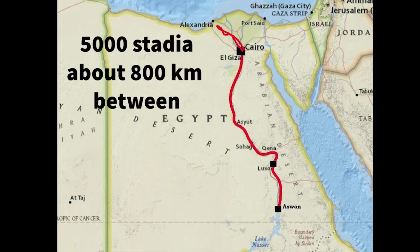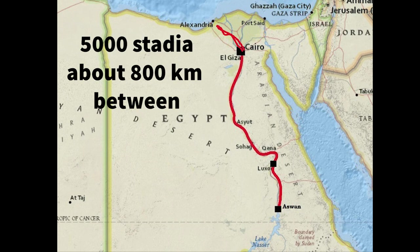Next thing that he did is he hired a traveler to go from Alexandria to Syene to measure the distance. He used a unit called stadia, and he measured about 5,000 stadia between Alexandria and Syene.